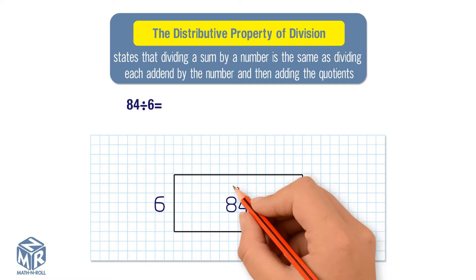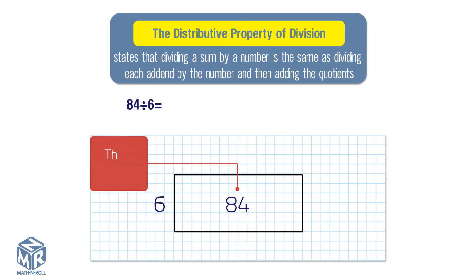Break up the dividend, 84, into 60 and 24. We do this because we know that 60 is a multiple of 6 and 6 times 10 is 60 and 6 times 4 is 24. We use these multiplication facts to help us with the division.